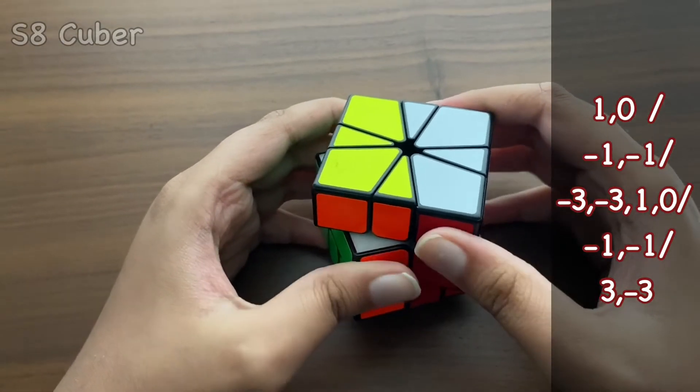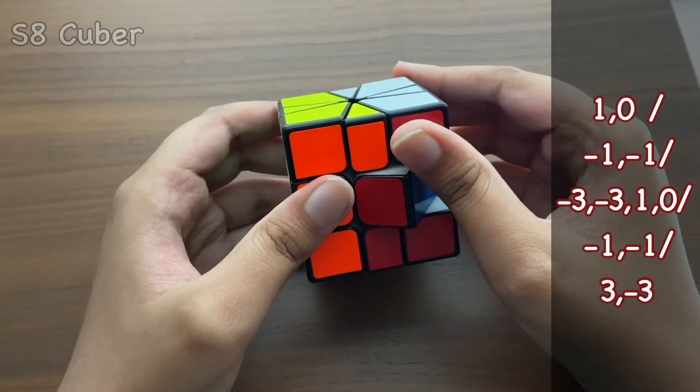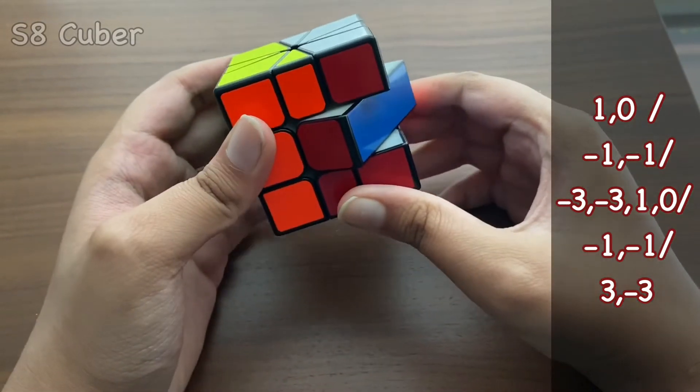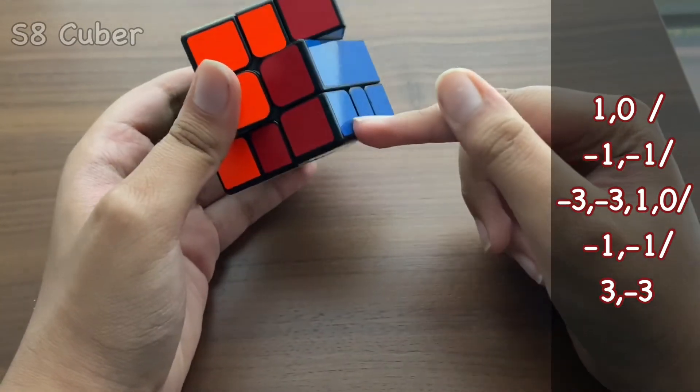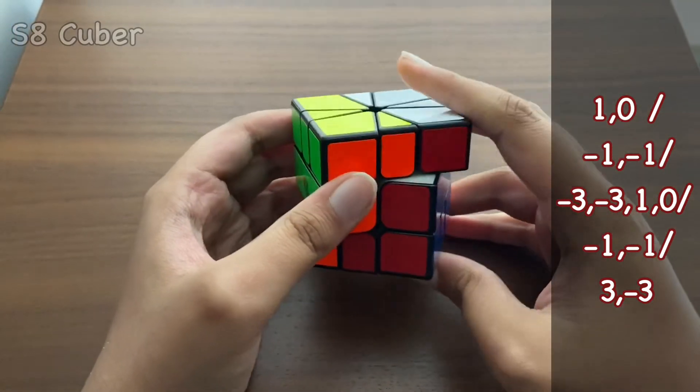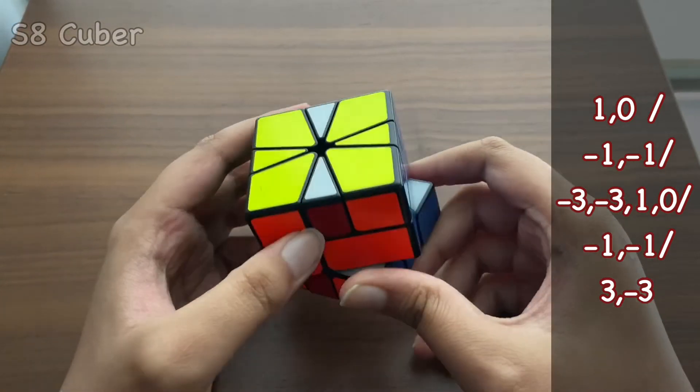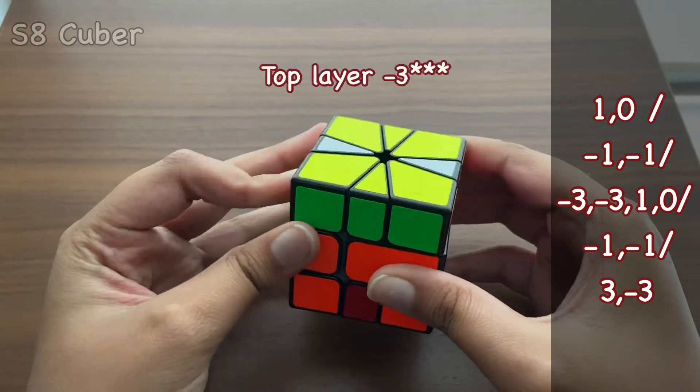Then we're going to be doing a minus one, which is like this. Okay, we move like this. And then the bottom layer also, we're going to be doing a minus one. This can be a bit confusing, but yeah, this is it. Now we're going to be doing a slash.